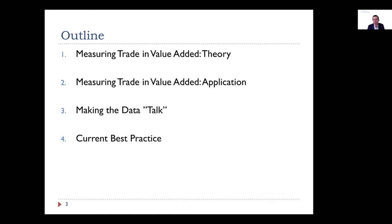In this lecture I'm going to do four things: talk about the theory of measuring trade in value added, then do an application, then — the most important part — making the data talk. Policy work is taking those numbers and using them to tell a story, letting your story be closely influenced by what you learn from the numbers. I'll also talk about basic tools to interpret these data in terms of GVC linkages discussed in the first class, then finish with current best practice.